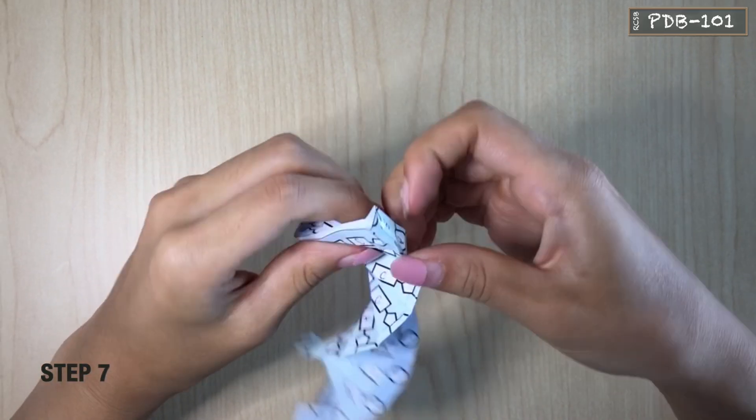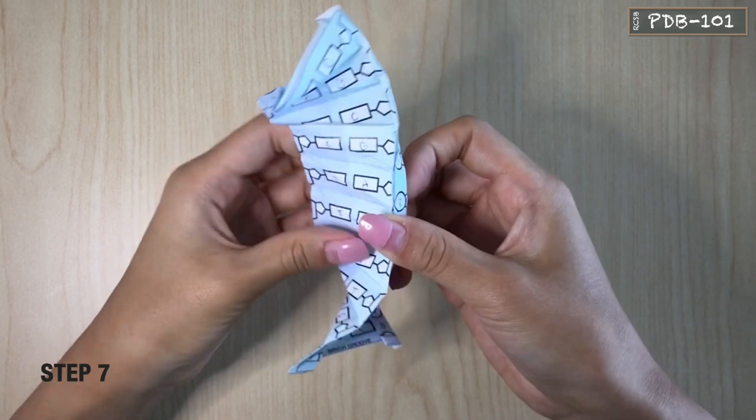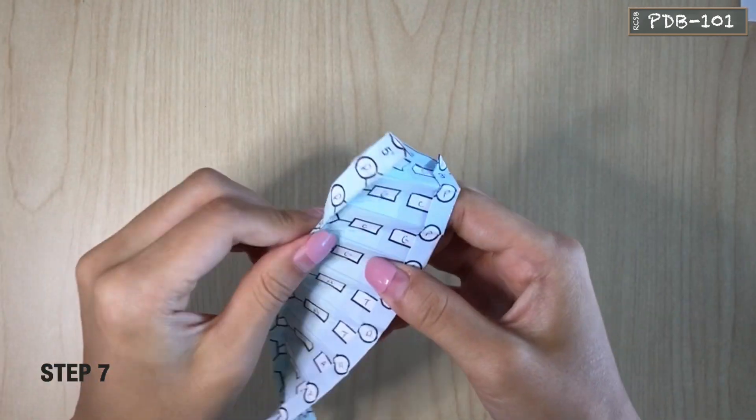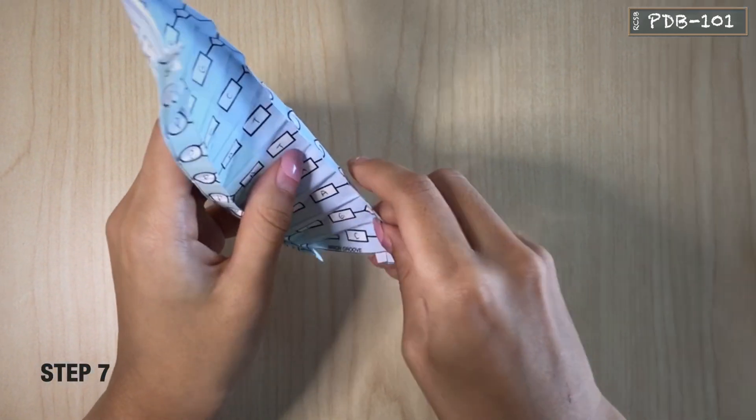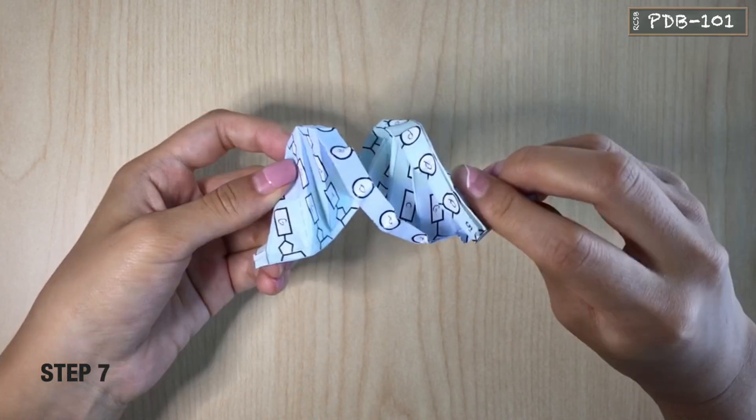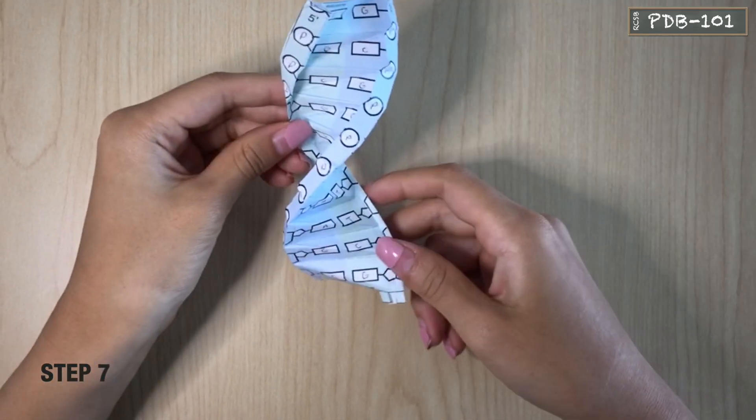Pull the model open and pop out the backbones on the sides. Your finished model is a right-handed double helix.